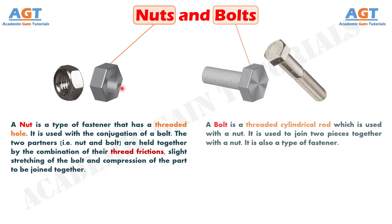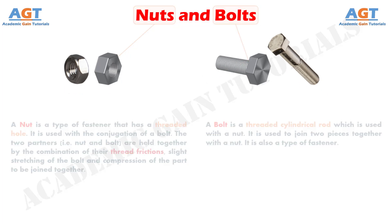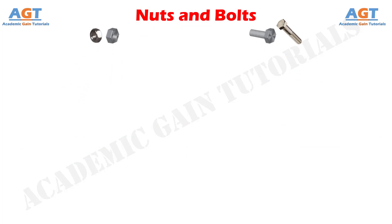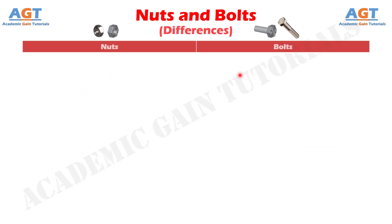On the other hand, a bolt is a threaded cylindrical rod which is used with a nut. It is used to join two pieces together with a nut. It is also a type of fastener. So, let's look into the basic differences among them.